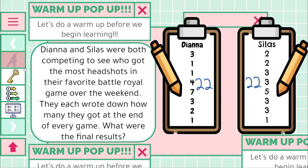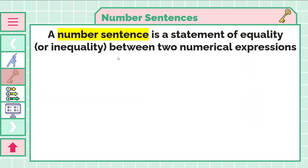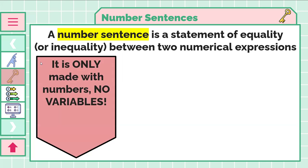With that, pause if you need to make any corrections, but I'm going to clear this up and head to our key concept, which is about number sentences. A number sentence is a statement of equality or inequality between two numerical expressions. Some things to keep in mind, it is only made with numbers, no variables.